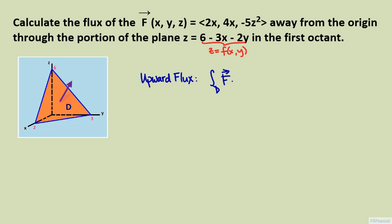We can obtain the normal vector from this definition. The normal vector is the vector given by three components. The first component is minus z sub x, which is the partial derivative of z with respect to x. The second component is minus z sub y, the partial derivative of z with respect to y. The third component is simply equal to 1.